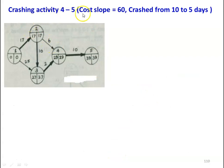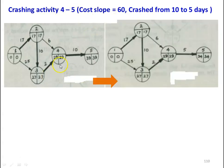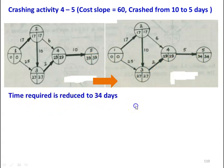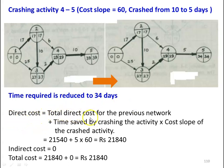Then, crashing activity 4-5 with cost slope 60, from 10 days to 5 days. The project duration is reduced from 39 days to 34 days. Direct cost = 21,540 plus (5 days saved × 60) = 21,840. Since there is no indirect cost, total cost equals 21,840.